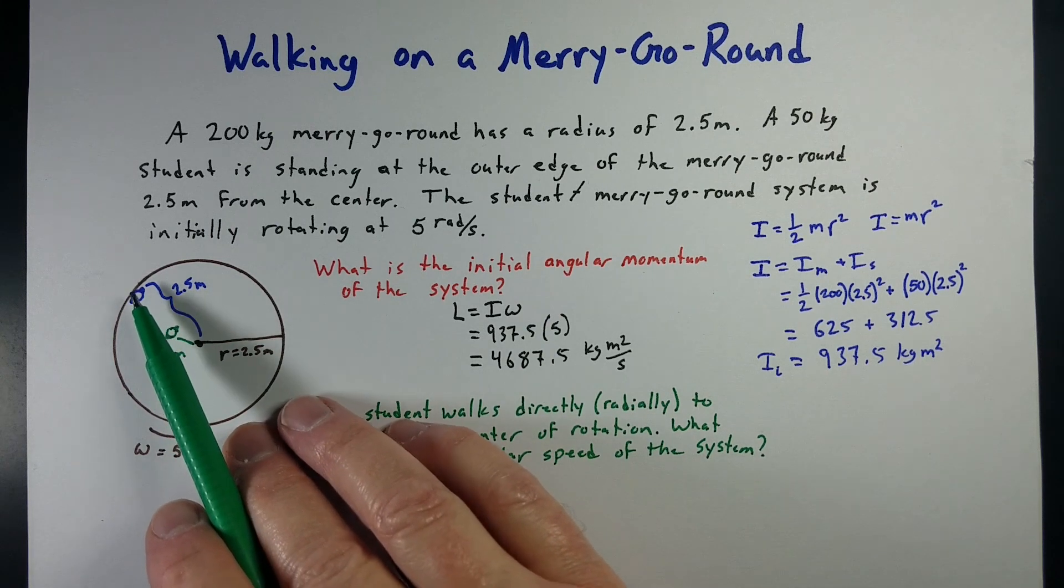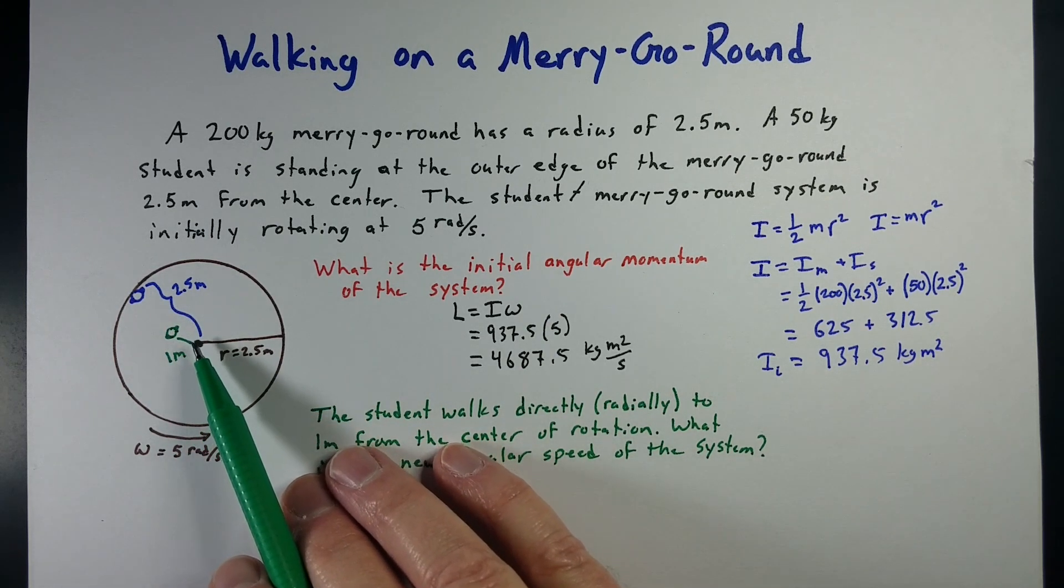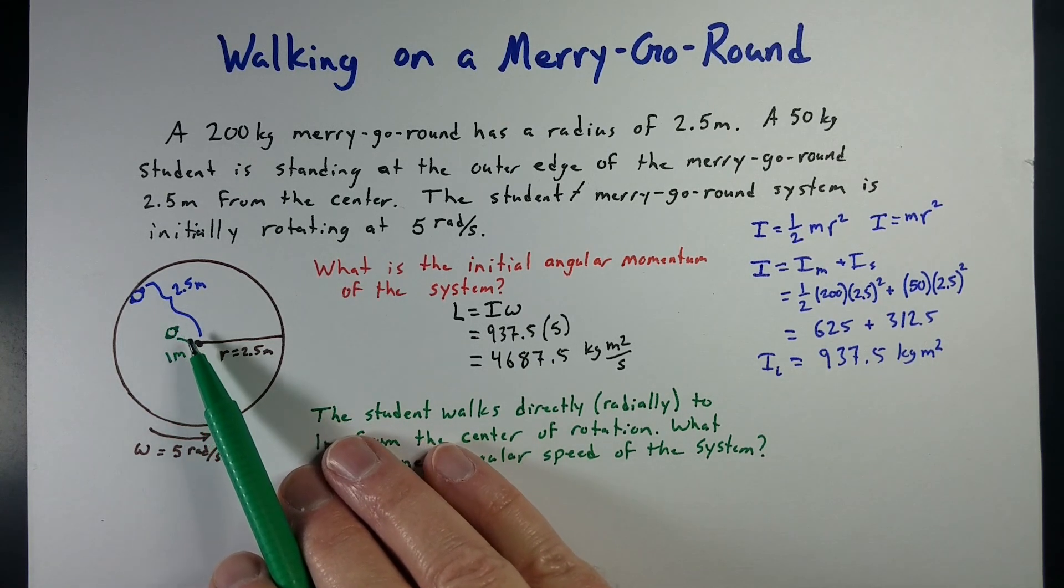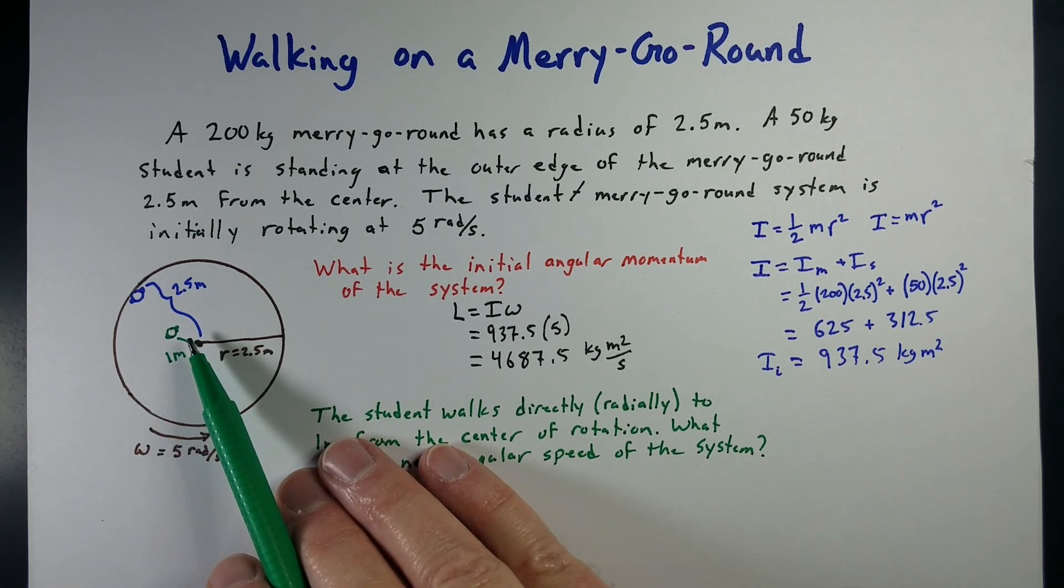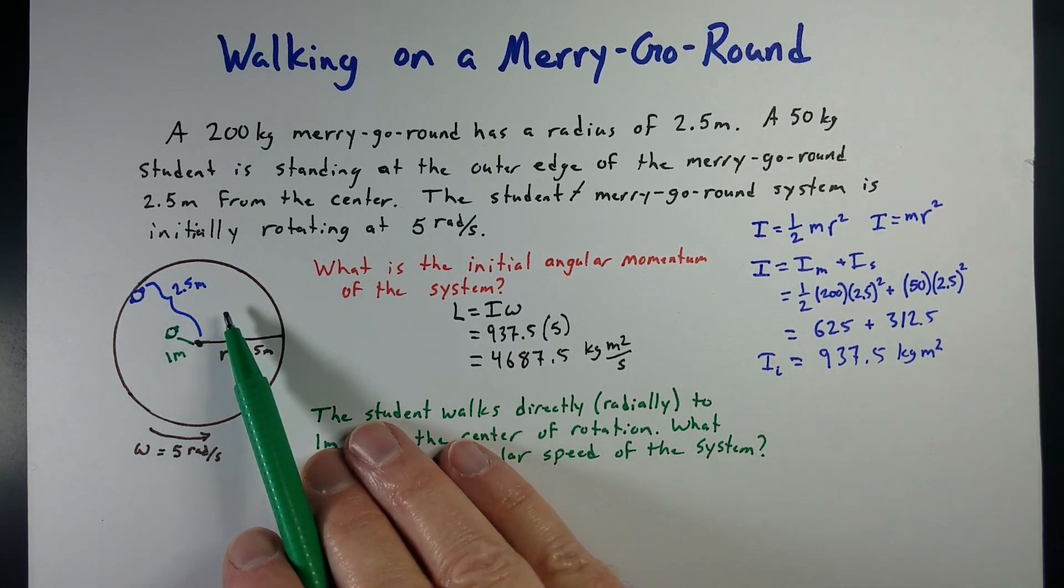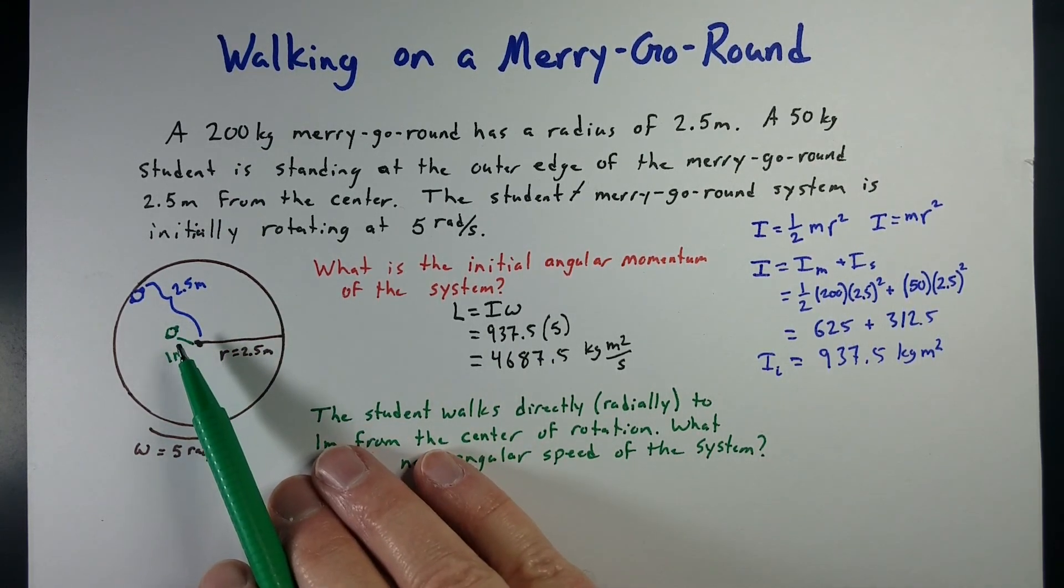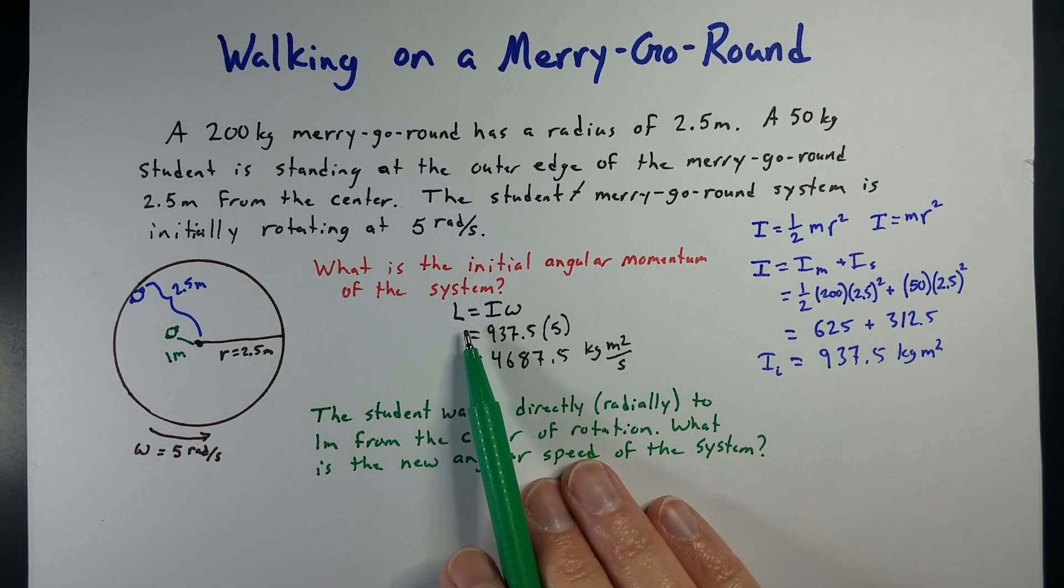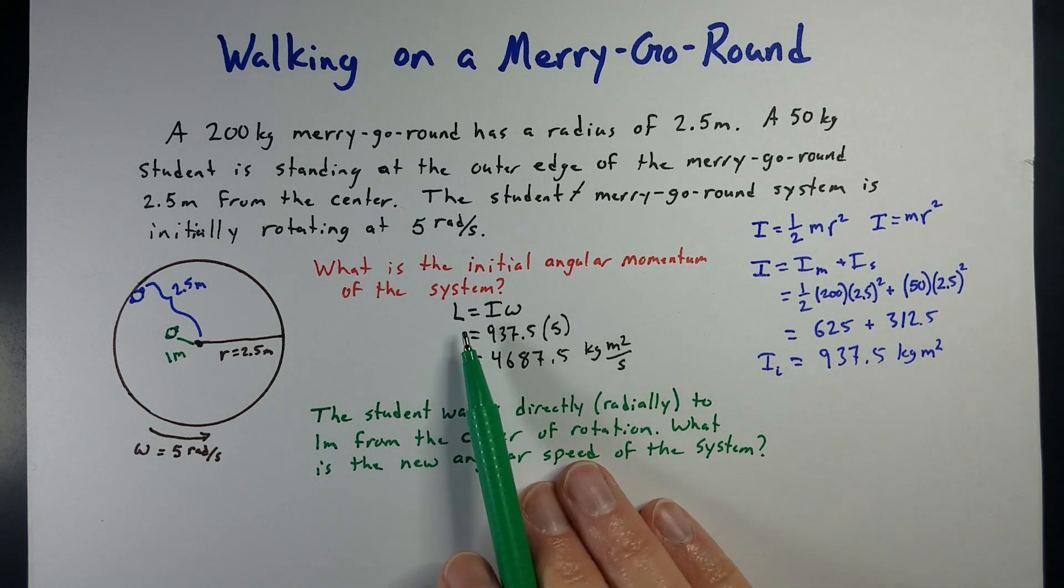So, we're bringing mass towards the center of our system. So, that should mean that our moment of inertia decreases, and that means our speed should increase if we keep angular momentum constant, which it should be conserved. Let's see if that works.